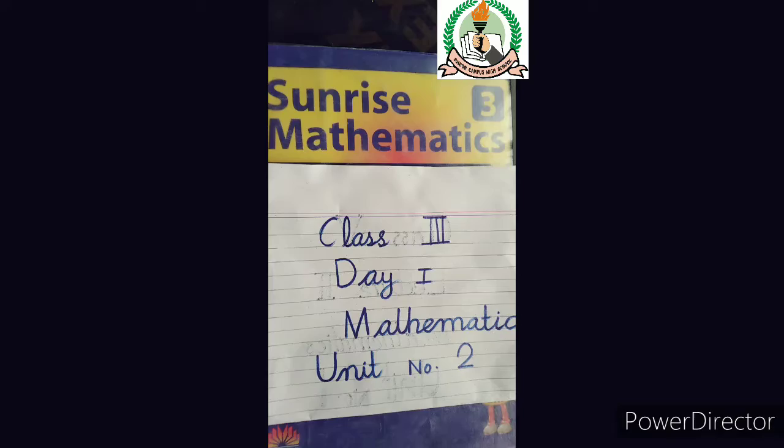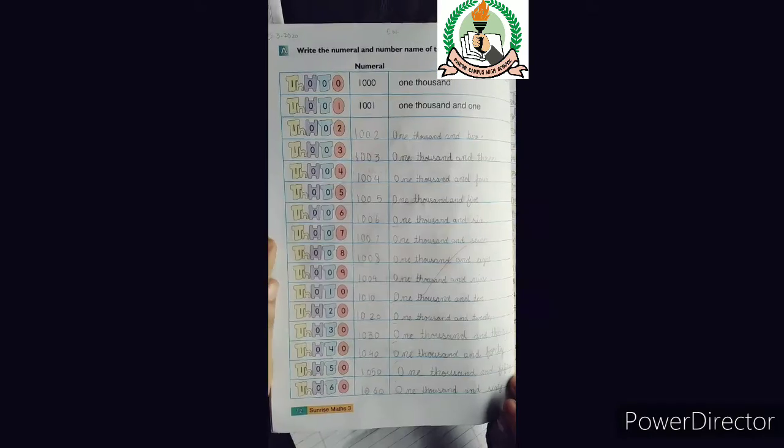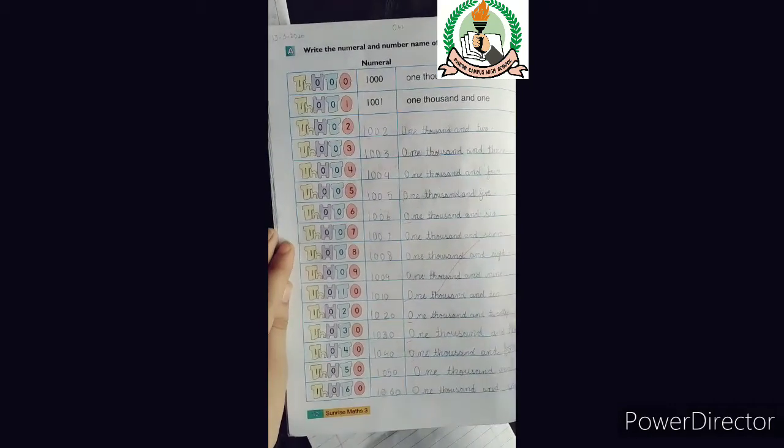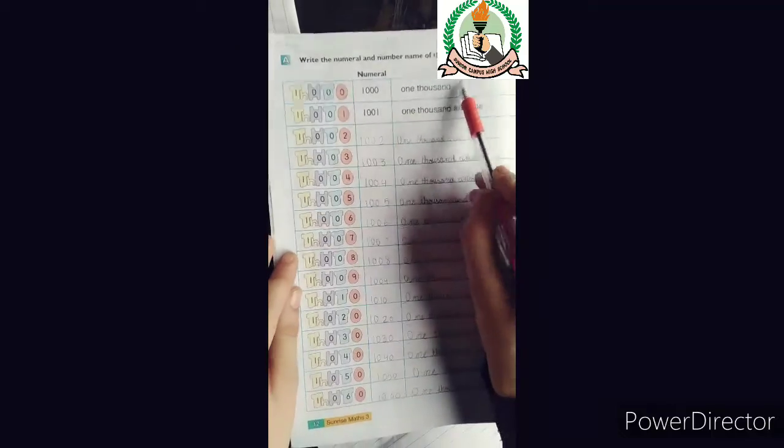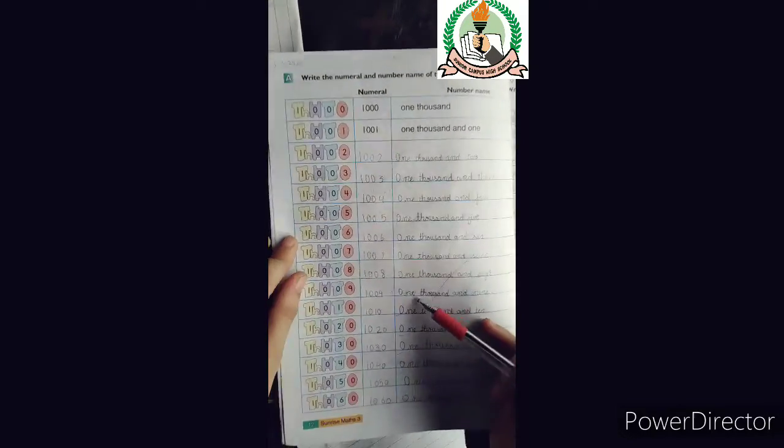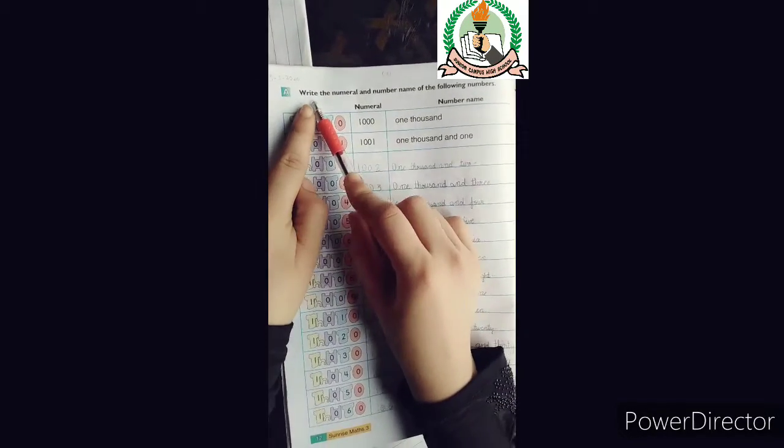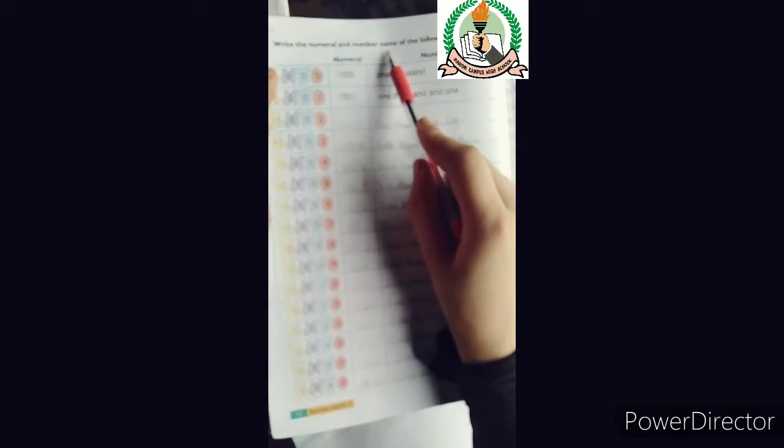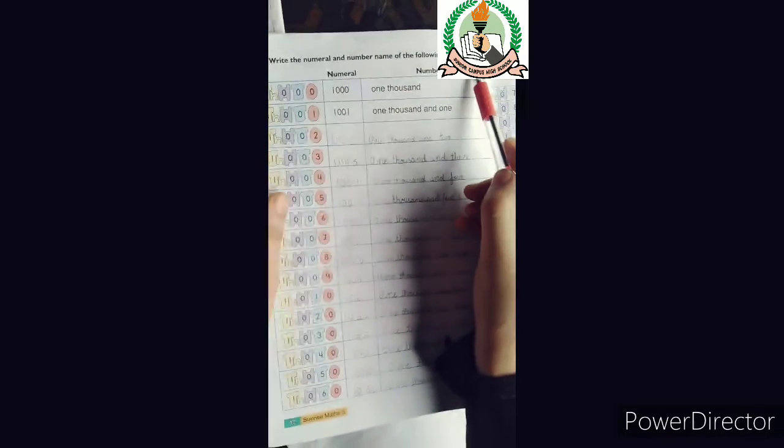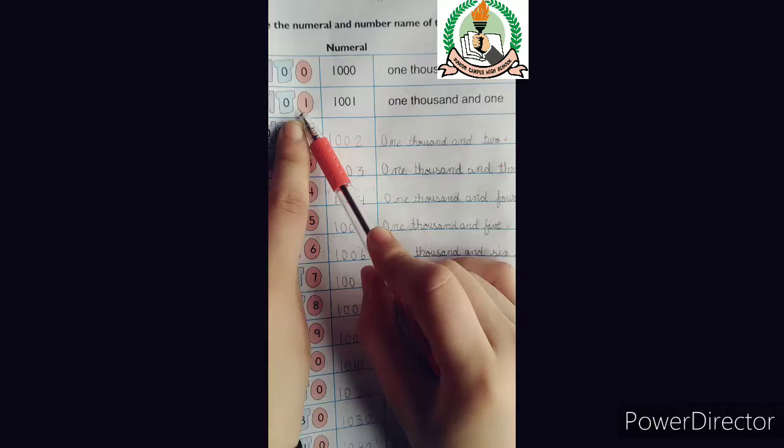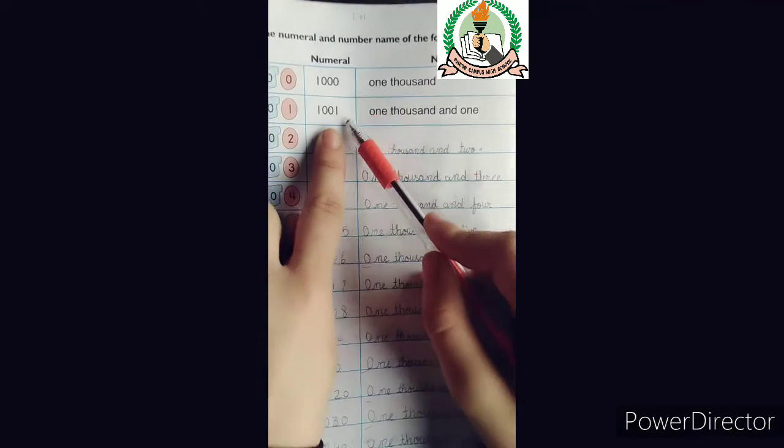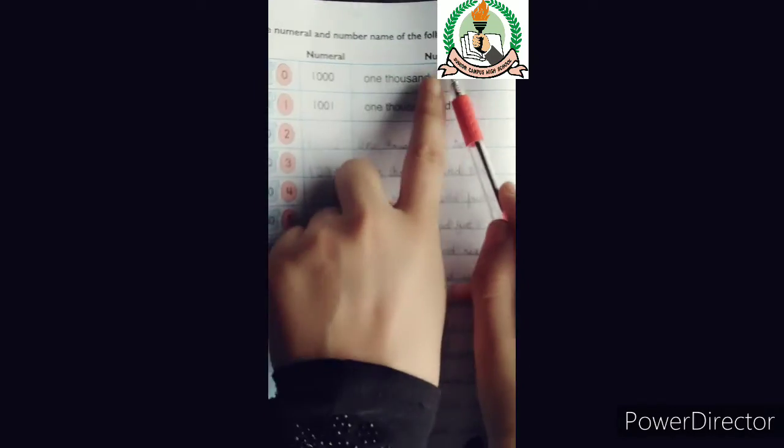Let's open page number 12 and 13. In these pages, we have to learn about the number names. We have the value that we have given in simple numerals. Then we will convert it to number names.